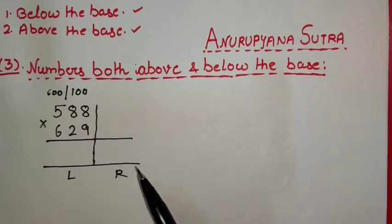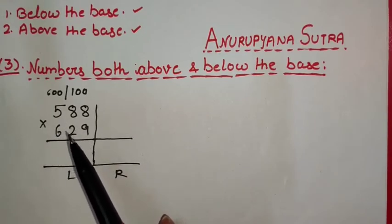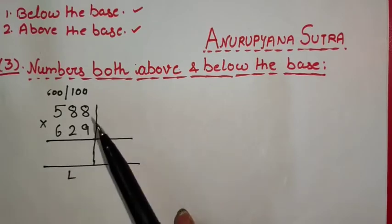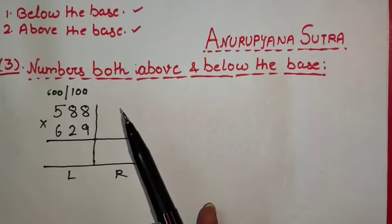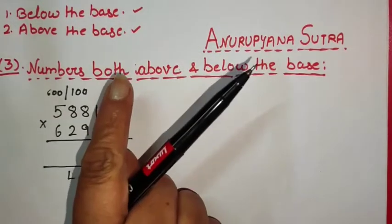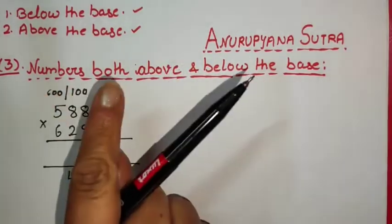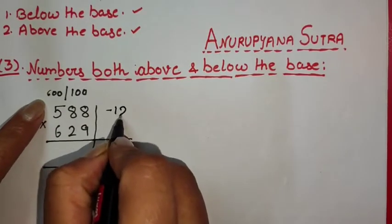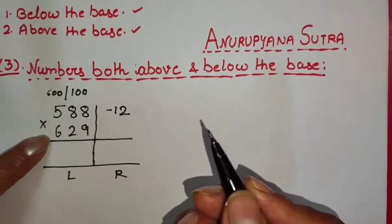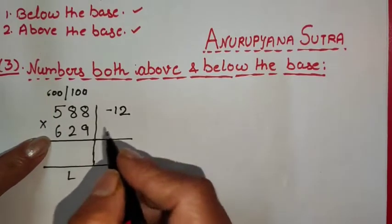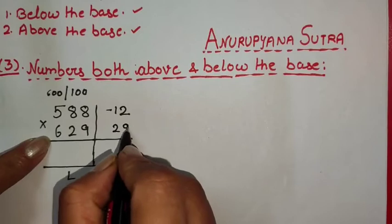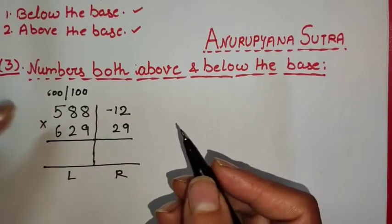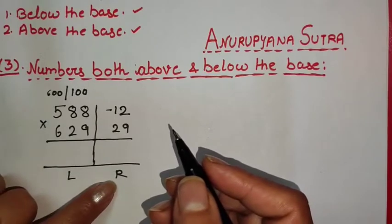Since we are applying the base method of multiplication, we divide our answer into two parts — the left-hand side and the right-hand side. On the right-hand side we write the deviation from the working base. Be very careful: the deviation is from the working base. Number 588 is 12 less than the working base, and number 629 is 29 more than the working base 600.